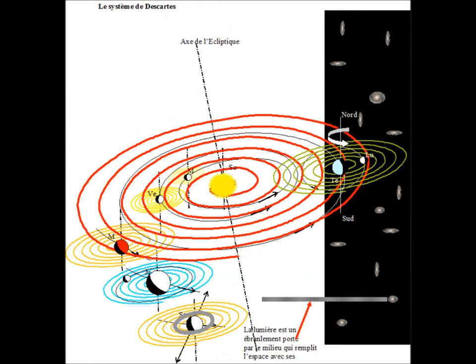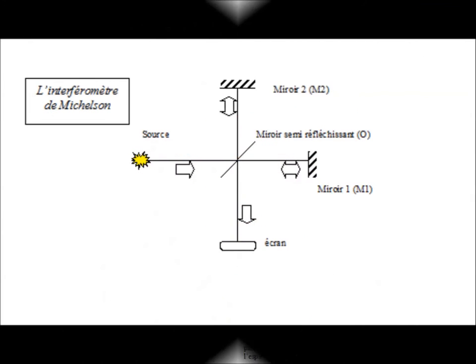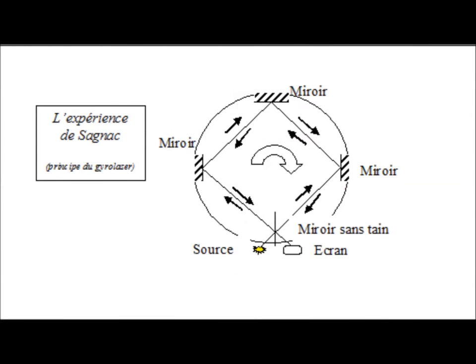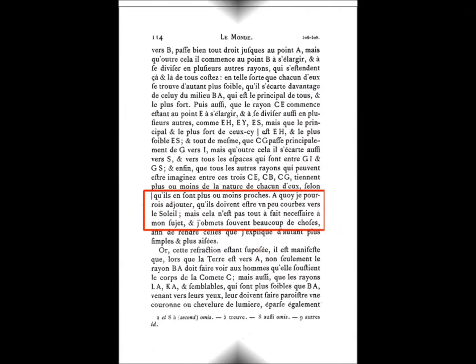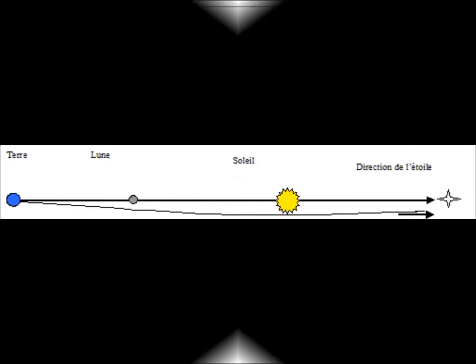Without going into the details of this theory, it should be noted that the theory of Descartes explains the Michelson's and Sagnac's experiments with full evidence. The most amazing is that Descartes had foreseen the deflection of light by the sun.